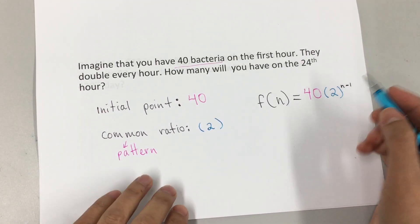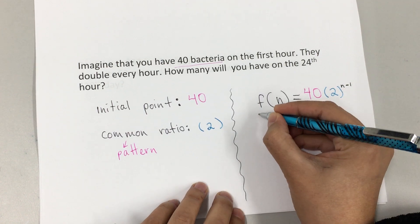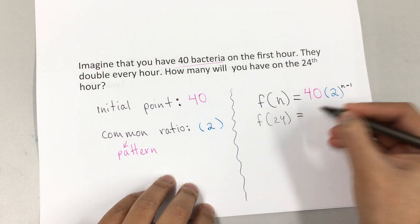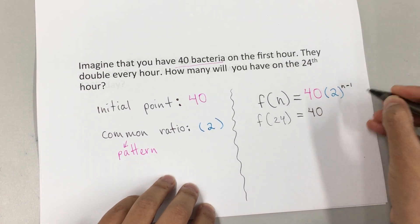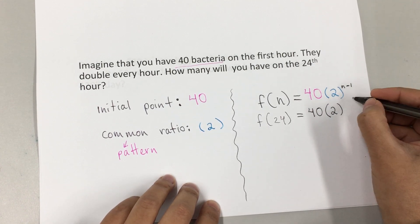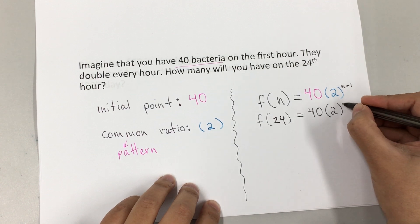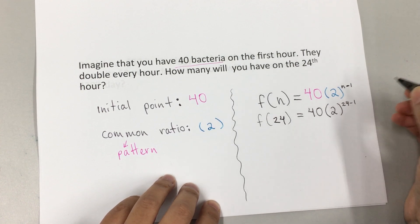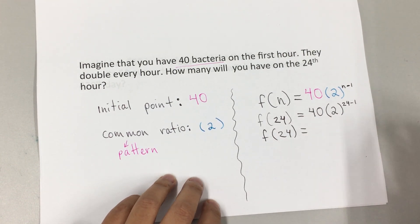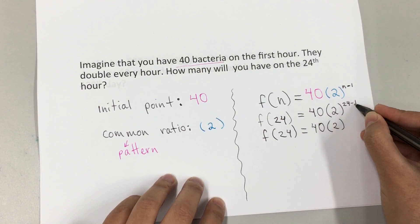So it's going to be f(24) equals 40, which is what I start with, multiply by 2 because it doubles, and then n minus 1. The n refers to this hour, so it's going to be 24 minus 1. So f(24) equals 40 times 2 to the 23rd.